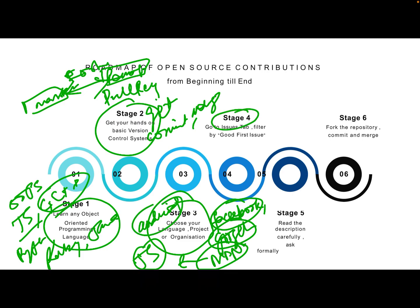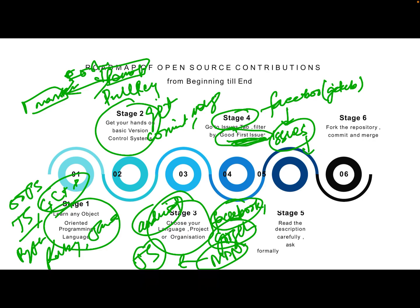In stage 4, once you have selected a project, go to its GitHub repository and navigate to the Issues tab. Filter the issues on the basis of 'good first issues.' Good first issues help you start with the fundamentals of how to contribute with a PR. They are generally tagged as small PRs which anybody can contribute to, and if you are a beginner they will be the easier ones.